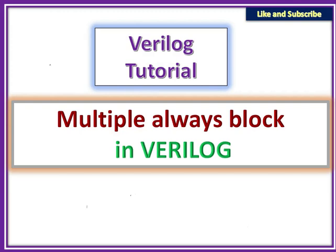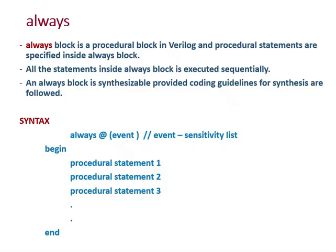In this lesson we are going to look at multiple always blocks in Verilog. The always block is a procedural block, and the statements written inside it are called procedural statements. These statements are executed sequentially. The syntax is: always @(sensitivity list) where whatever is written inside the parenthesis is the sensitivity list — it can be signals like a, b, or c.